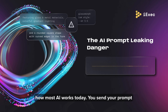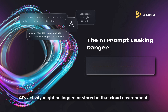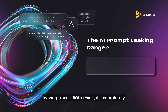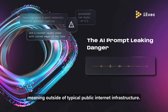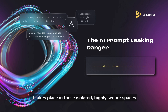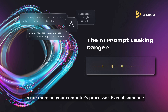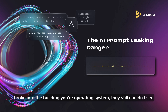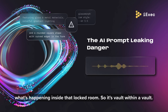Think about how most AI works today. You send your prompt to a server, the AI processes it, and sends back the result. Often, your prompt and the AI's activity might be logged or stored in that cloud environment, leaving traces. With iExec, it's completely different. The AI computation happens off-chain — outside of the typical public internet infrastructure — in these isolated, highly secure spaces called enclaves. It's as if you have a super secure room on your computer's processor. Even if someone broke into the building or your operating system, they still couldn't see what's happening inside that locked room.